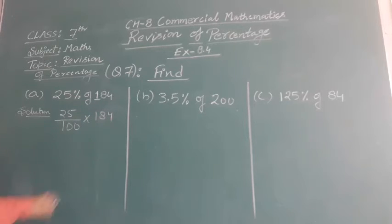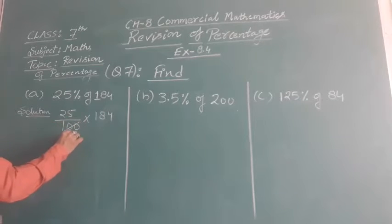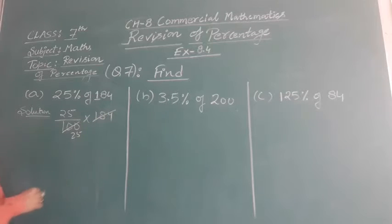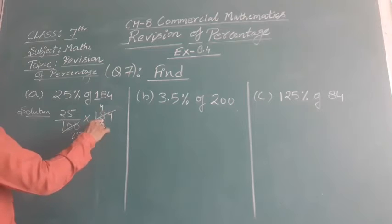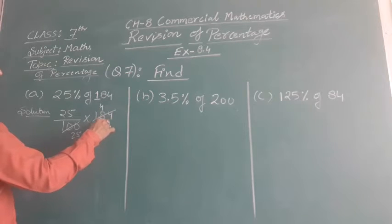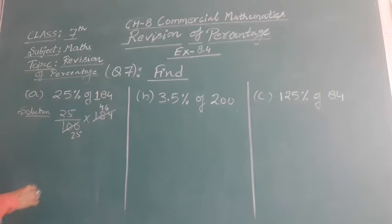Now, dividing 184 and 100 by 4, we will get 25 times 46. Dividing 184 by 4, we get 4 into 4 is 16, we carry 2. 4 into 6 is 24.